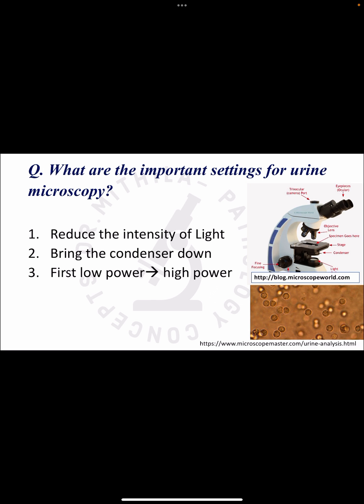The next question is: what are the important settings which have to be done to conduct microscopic examination of urine? First, we reduce the intensity of light. Second, we bring the condenser down. Third, when we examine the urine sample under the microscope, we first examine under low power and then go to high power.